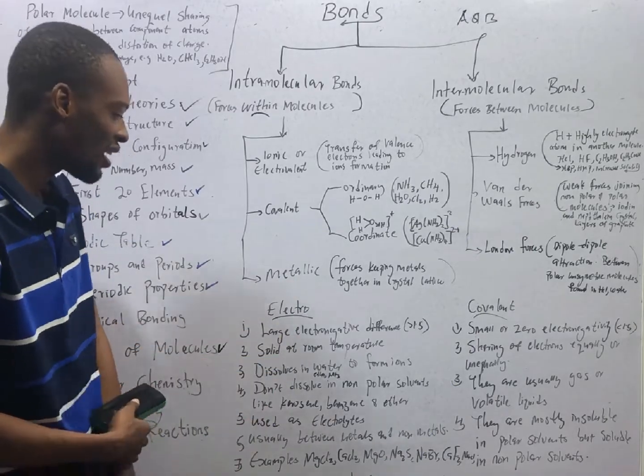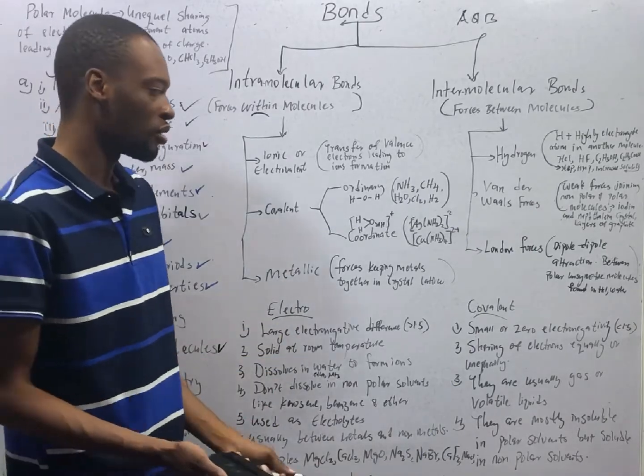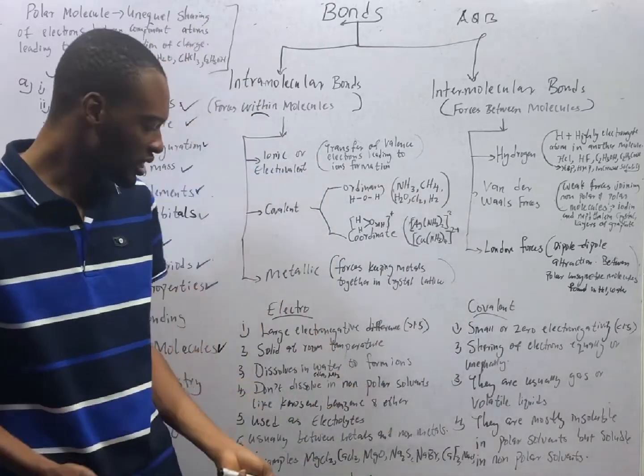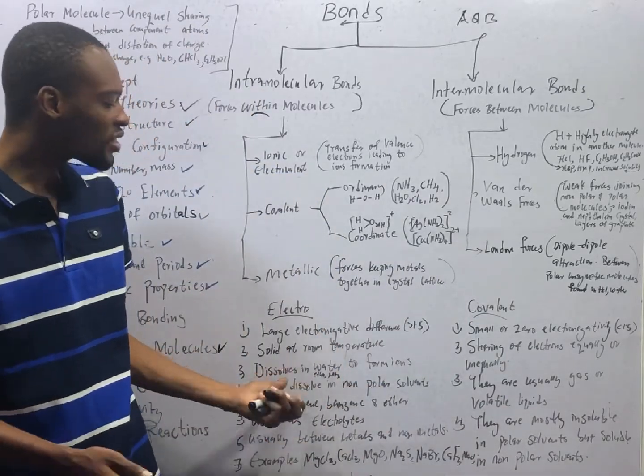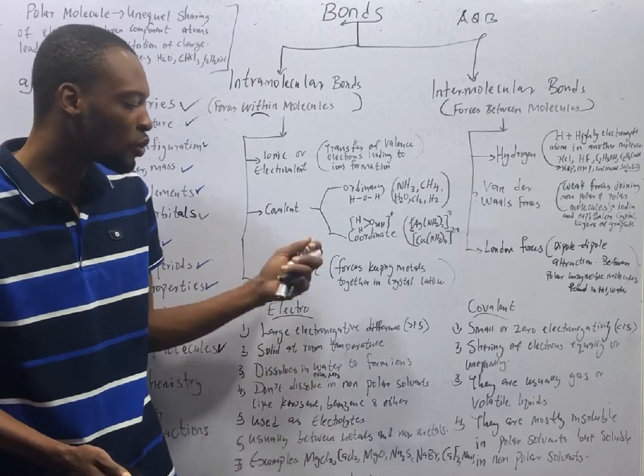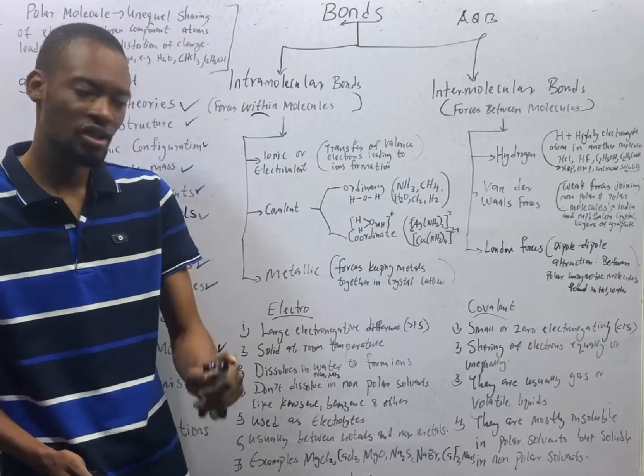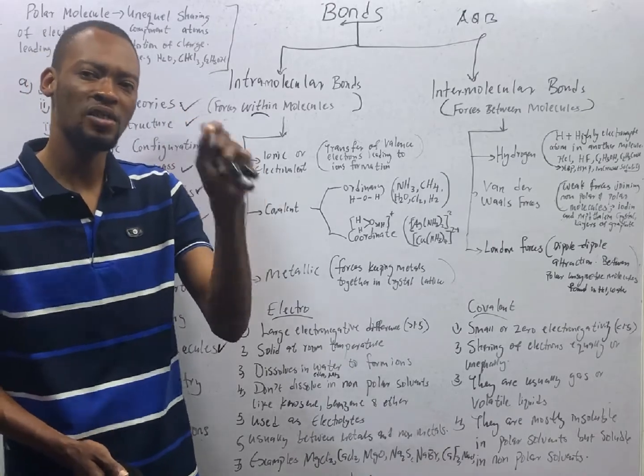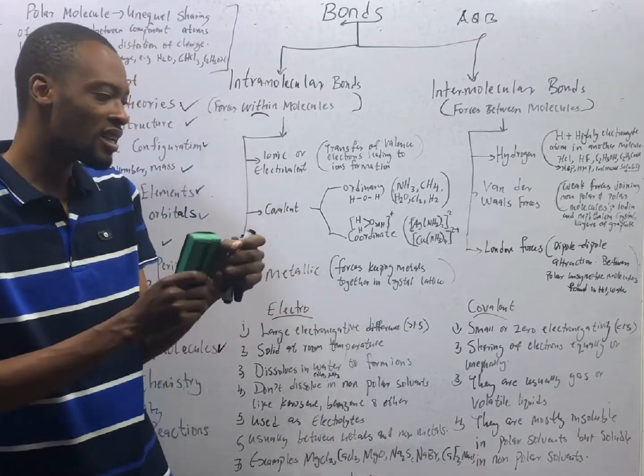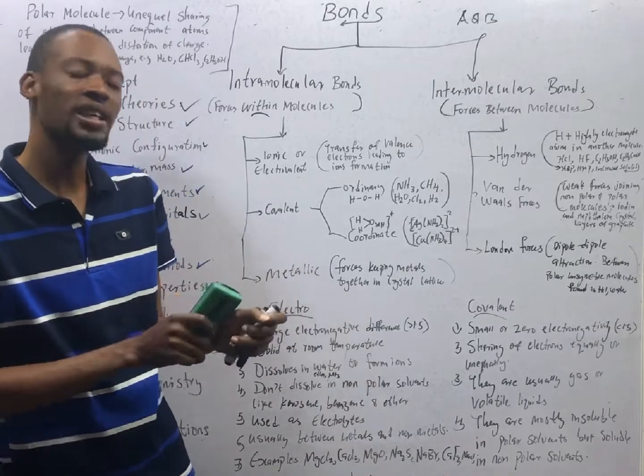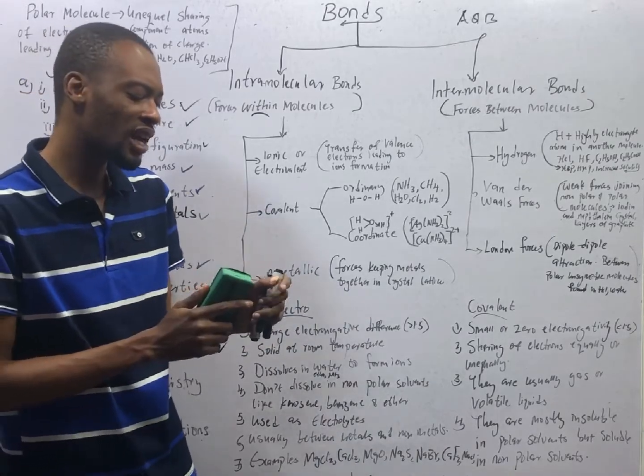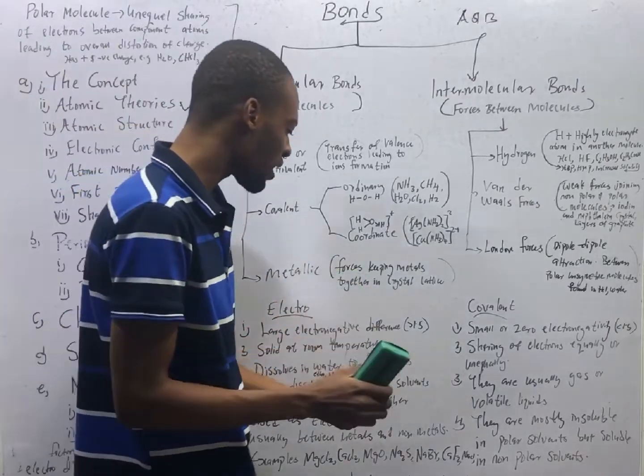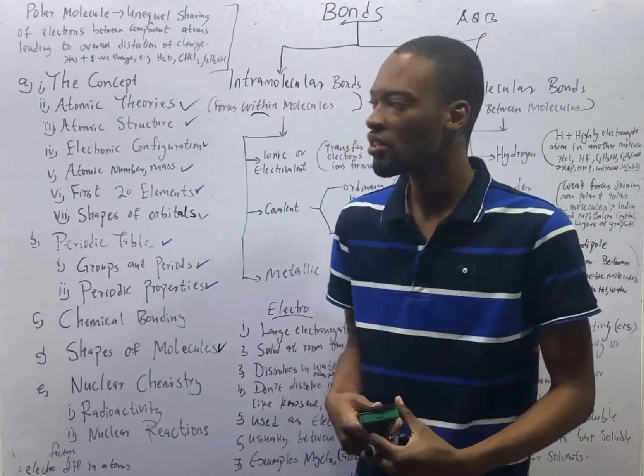Electrovalent compounds are solid at room temperature. So they are usually solid. Most solid compounds have electrovalent bonding. And electrovalent compounds, they dissolve in water to form ions. They dissolve in polar solvents generally. Water is a polar solvent, ethanol is a polar solvent, and ammonia is a polar solvent. Which means electrovalent compounds will dissolve in these solvents.